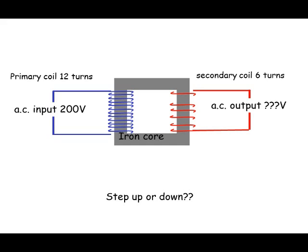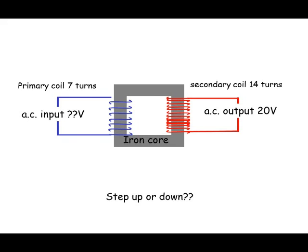Another example, if you know there's 12 turns on the primary and 6 on the secondary, then it's going down by a factor of 2. So the voltage must also go down by a factor of 2 and therefore get 100 volts output and therefore it's a step down. More examples, 7 turns to 14 will mean it goes up by a factor of 2. So it's 10 volts to 20, step up.